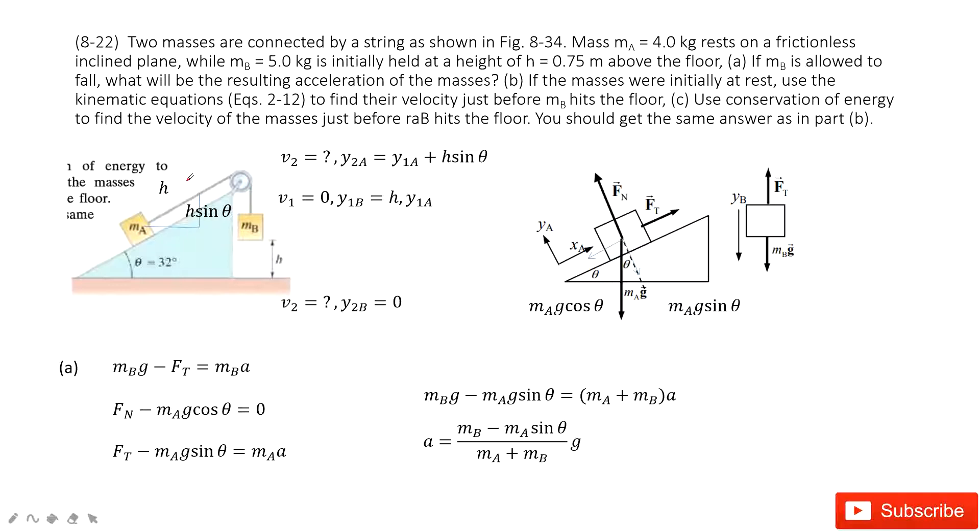First we need to find the acceleration. How can we do that? Do the force analysis. For box A, we need to project the gravity into two components: MAg sin θ and MAg cos θ. Therefore we can write the equation. At the y-component, F minus MAg cos θ equals zero. The acceleration is zero; there is no motion on the y-component. At x-component, we have tension minus MAg sin θ equals mass times acceleration.